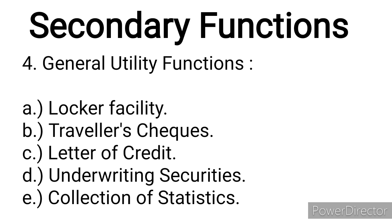The last category of secondary functions is general utility functions. These include: locker facility — providing safety vaults to keep valuable articles; traveler's checks — issued to customers to avoid the risk of carrying cash during journeys; letters of credit — certifying the credit worthiness of customers; underwriting securities — commercial banks undertake underwriting, and the public, trusting banks' credit worthiness, readily buys such securities; and collection of statistics relating to trade, commerce, and industry to advise customers on financial markets.